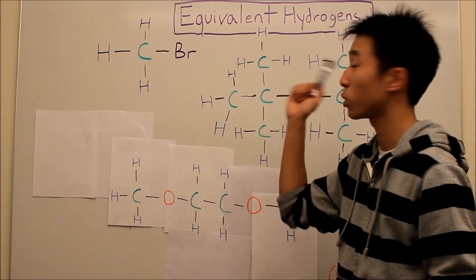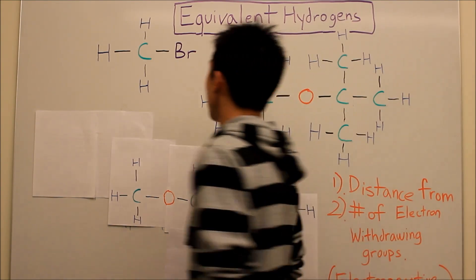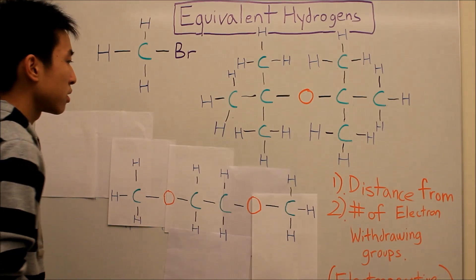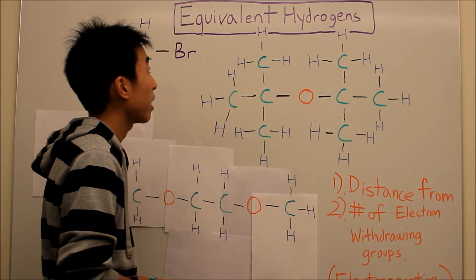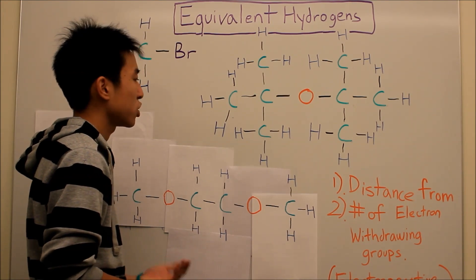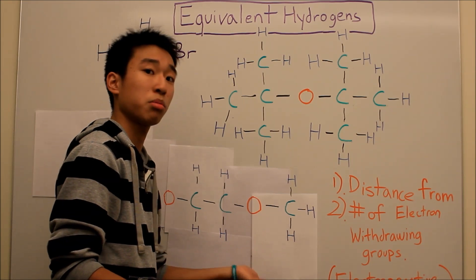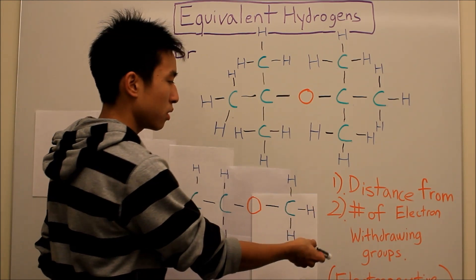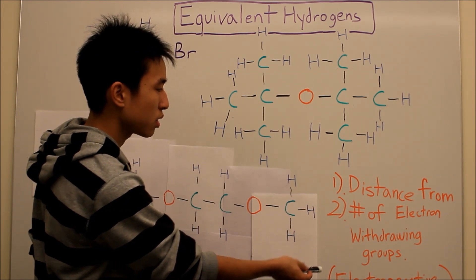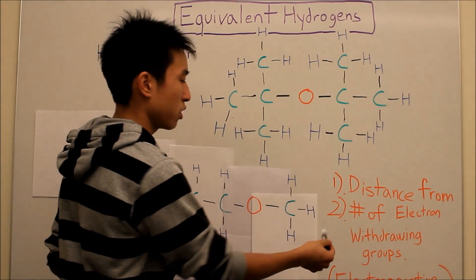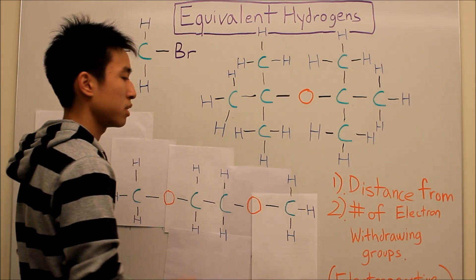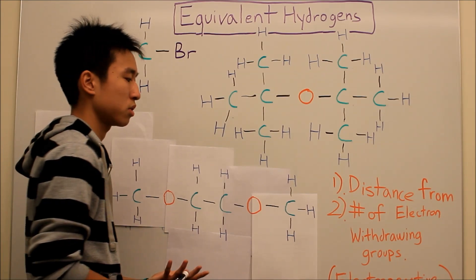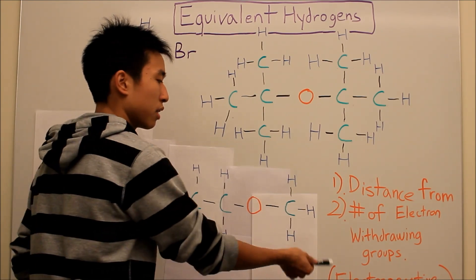This one's going to be about equivalent hydrogens. So the two factors that determine how shielded or deshielded you are, like I talked about in the previous video, are distance from electron-withdrawing groups, or the number of electron-withdrawing groups in your vicinity. Electron-withdrawing groups are also known as electronegative groups.